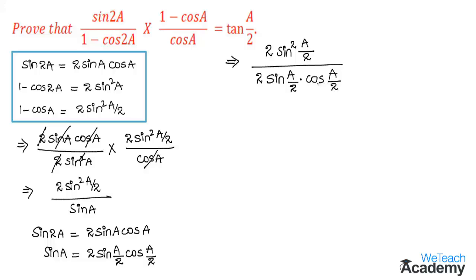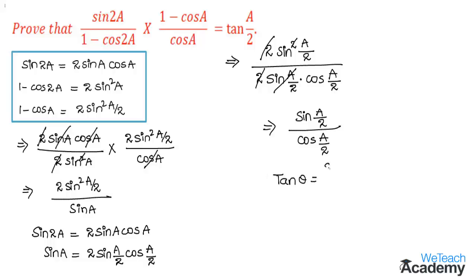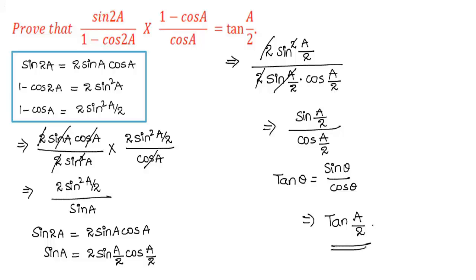Here, 2 in the numerator and 2 in the denominator get cancelled, and sin a by 2 in the numerator and sin a by 2 in the denominator get cancelled. So we are left with sin a by 2 divided by cos a by 2. Using the definition of tan theta equals sin theta divided by cos theta, this gives us tan a by 2, which is exactly the RHS.